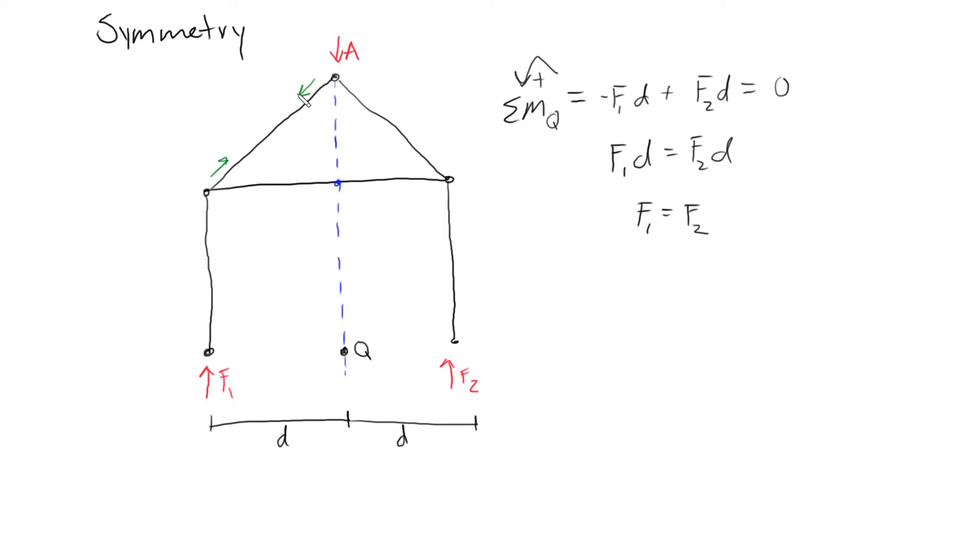what that means is that the forces acting on this side of the diagram are equal to the mirrored image. So we could say that this member right here is in compression as well and has the same magnitude as the forces here. And then we can repeat this process.